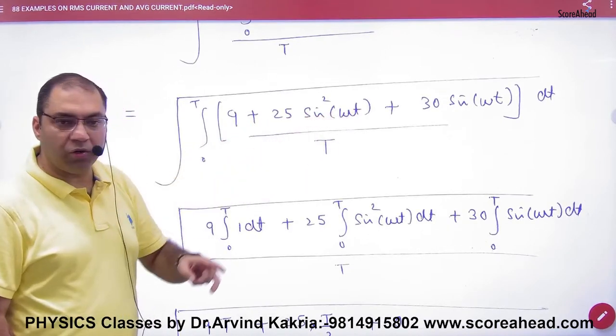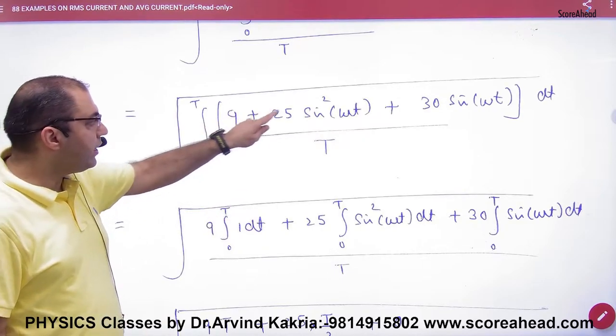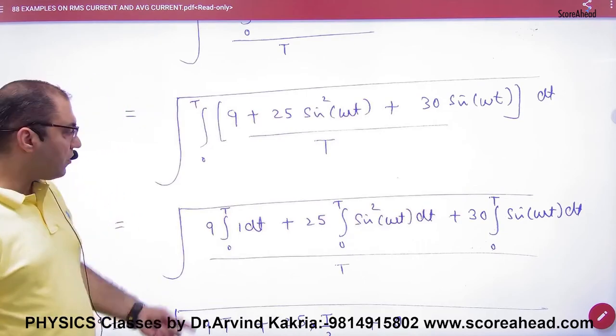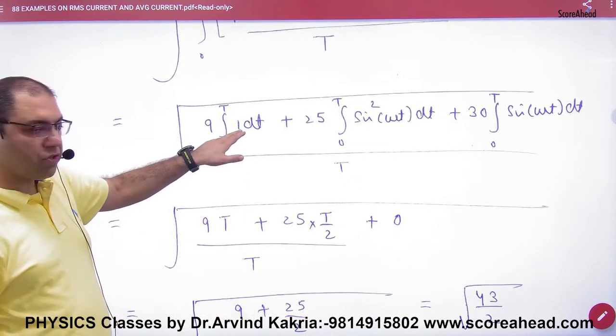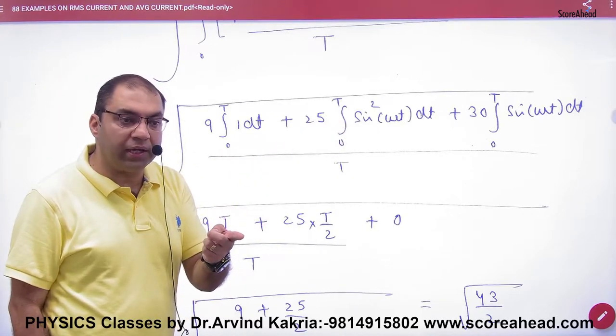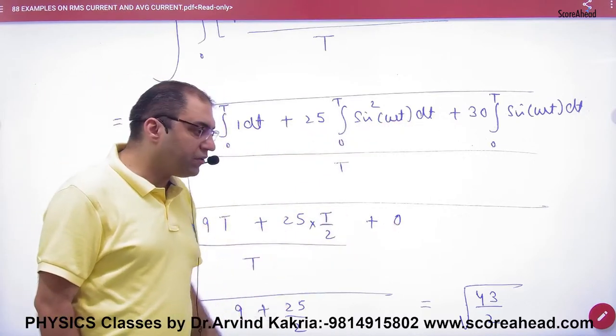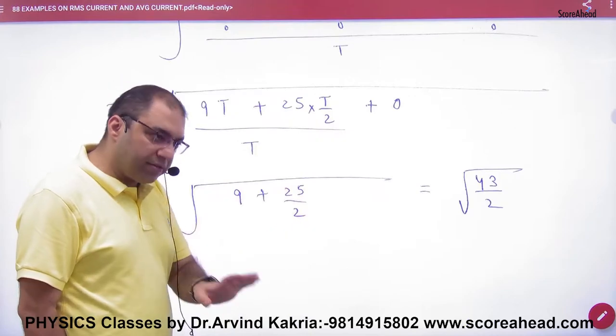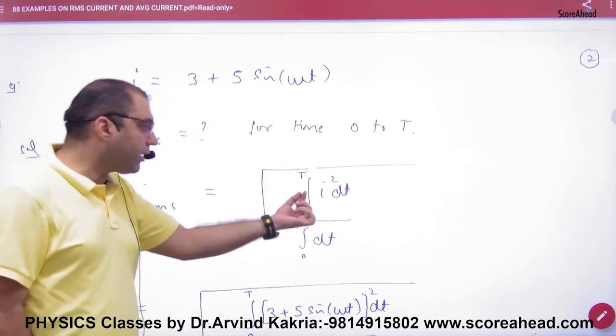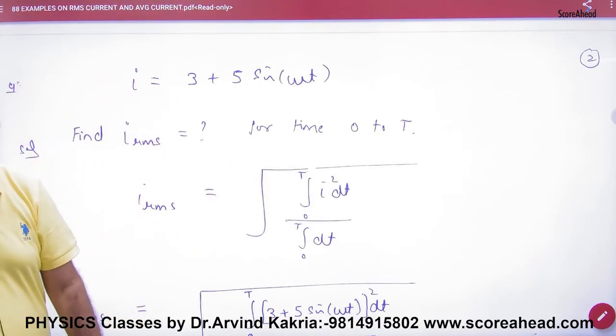Open it again with integration of first term plus second term plus third term. Constants go out. Integration of 1dt gives T. Sin² integration from 0 to T gives T/2. Integration of sin(ωt) is 0. T cancels, answer comes. Just take the current function, put I², square the whole thing, and the answer will come.